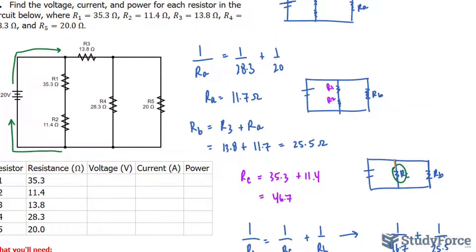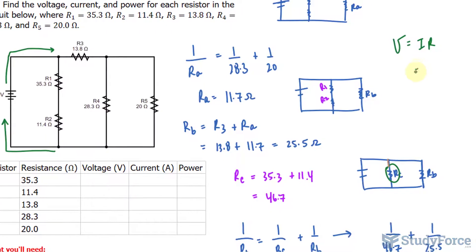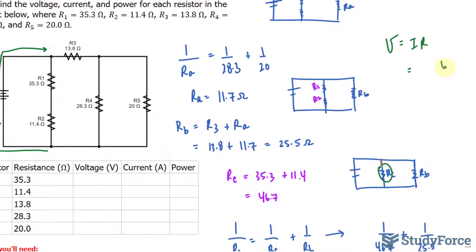Let me show you what I mean. We have V equals IR, that's Ohm's law, and in part one we found that RC had a resistance of 46.7. So I'll place that value in for R.